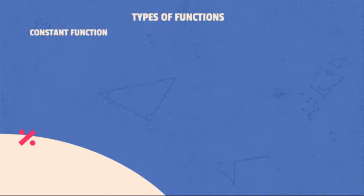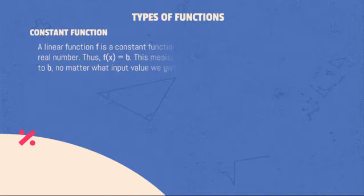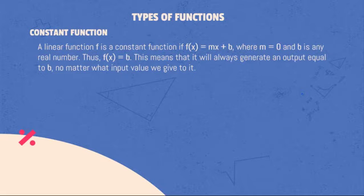Constant function: A linear function f is a constant function if f(x) = mx + b, where m = 0 and b is any real number. Thus, f(x) = b. This means that it will always generate an output equal to b, no matter what input value we give to it.